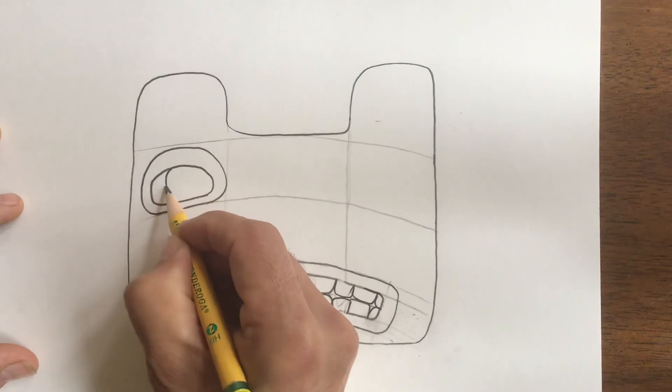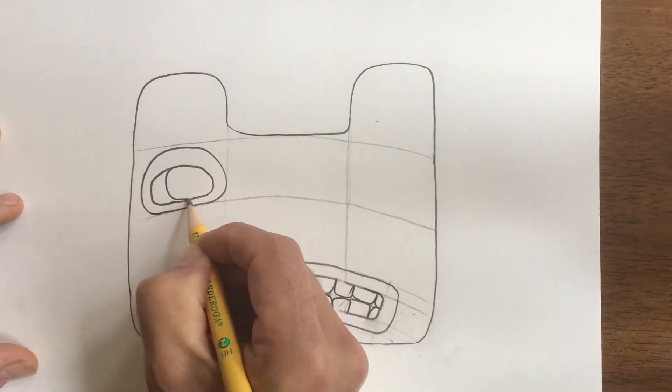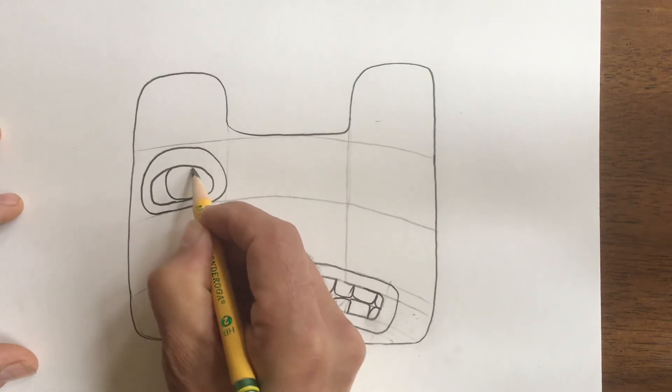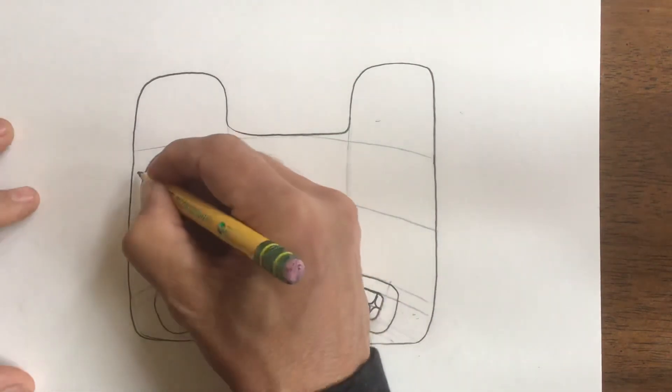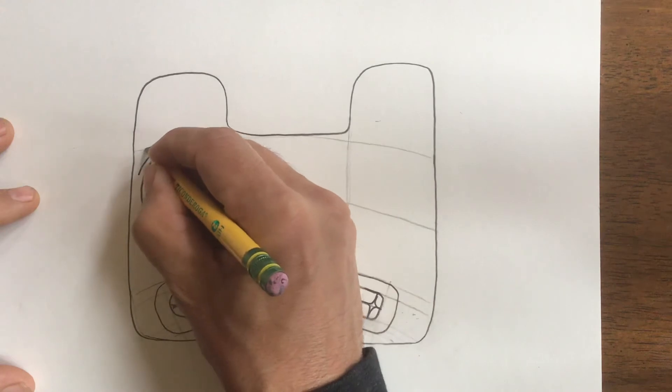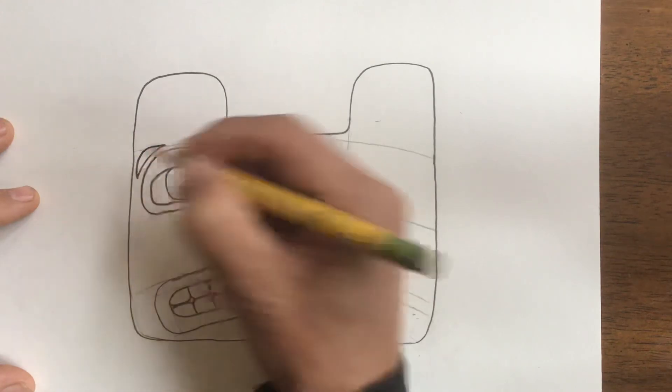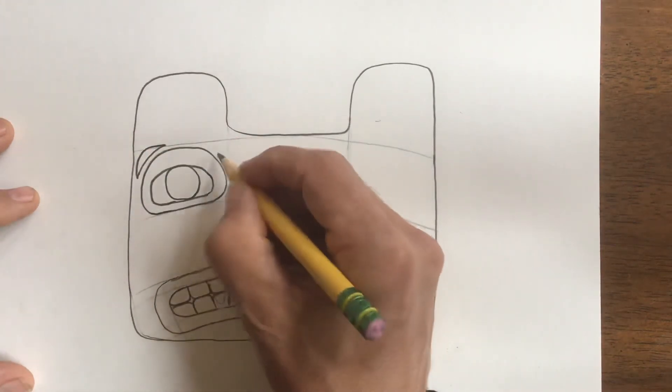All right. And I am going to want you to do this same thing with an animal face and start to create your Salish design work. Using the crescents, the ovoids.